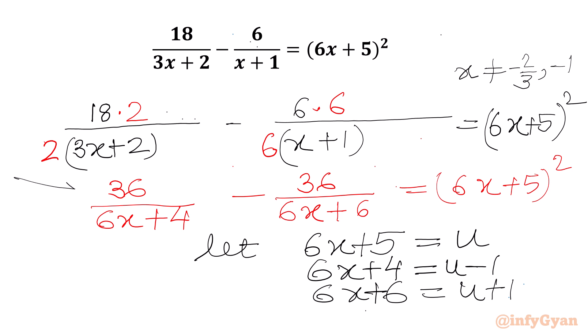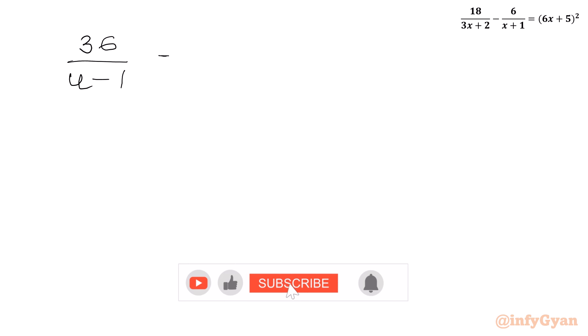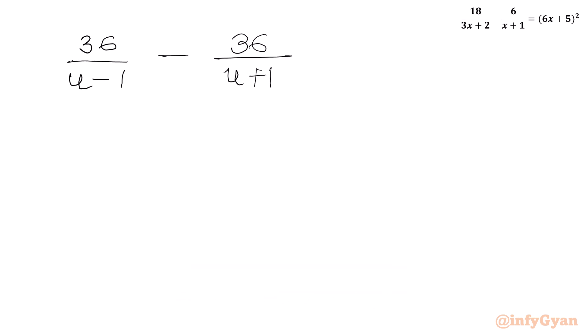So our equation becomes: 36 over (u − 1) minus 36 over (u + 1) equals u squared.